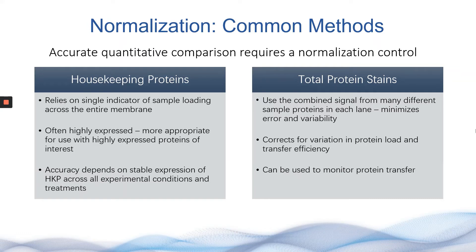Total protein, by contrast, looks at the intensity of protein within an entire lane of a sample. This helps researchers to correct for variation in protein load and can also help to diagnose any transfer inefficiencies. Furthermore, with total protein stains, researchers can actually stain their membrane and image it immediately after transferring and right before the antibody incubation. This allows researchers to validate that a successful transfer was achieved prior to proceeding towards costly and time-consuming antibody incubation steps.